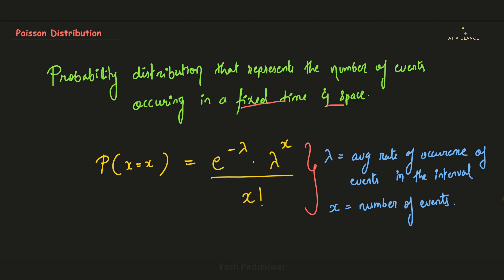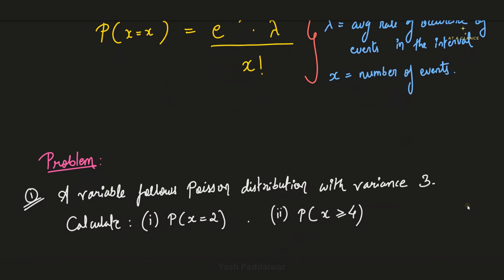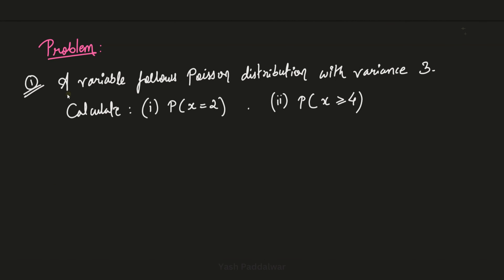Poisson Distribution is a very important and significant topic. A numerical on this particular topic will surely be asked. In this video, we will be solving two most important numericals of Poisson Distribution. The first numerical will be simple and straightforward, and the second will be a little twisted one. By the end, you will become proficient in solving numericals of Poisson Distribution.